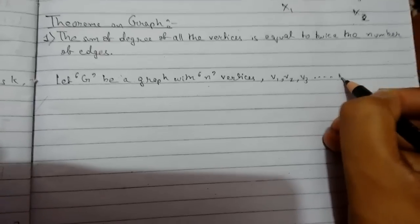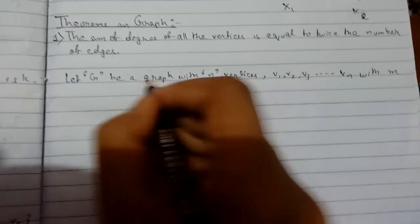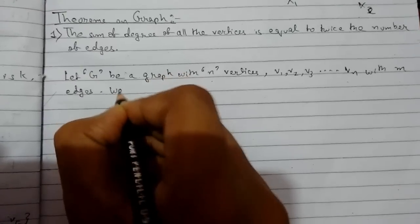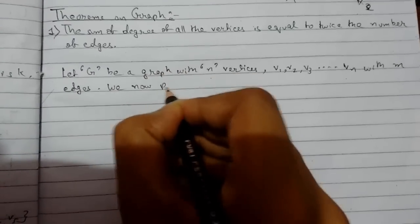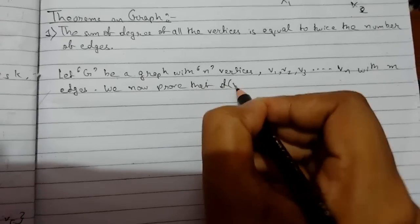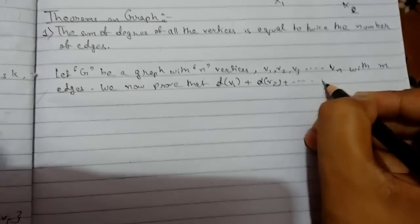We now prove that degree of v1 plus degree of v2 up to degree of vn is twice the number of edges, that is 2m.